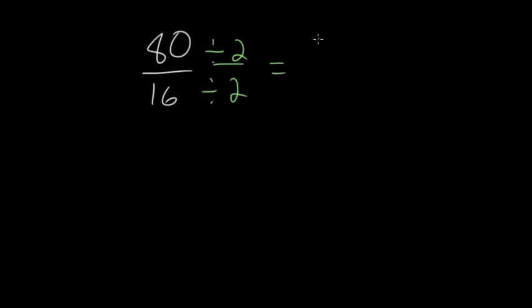Since both of these are even numbers, we can just divide them each by 2. We will get 40 for the numerator and 8 for the denominator. Since both of these are still even numbers, we can continue the process. Divide them each by 2, and you get 20 over 4.